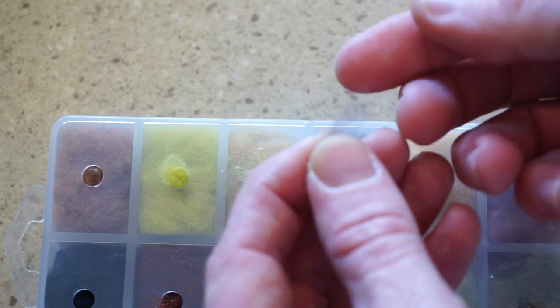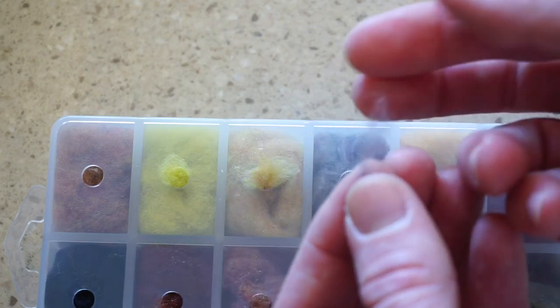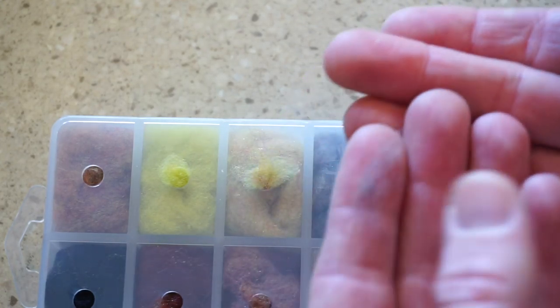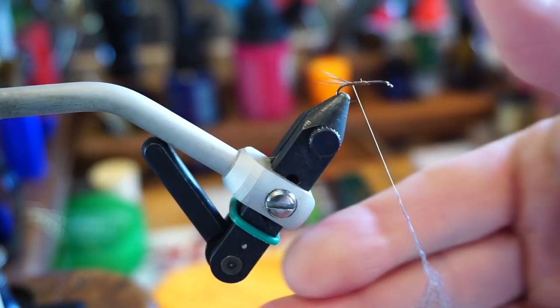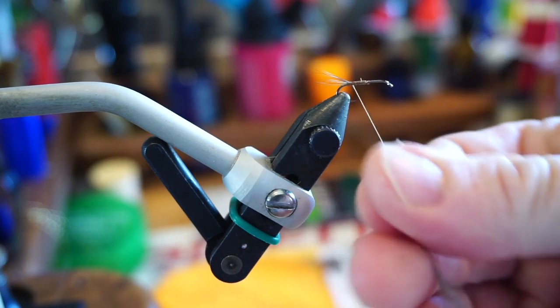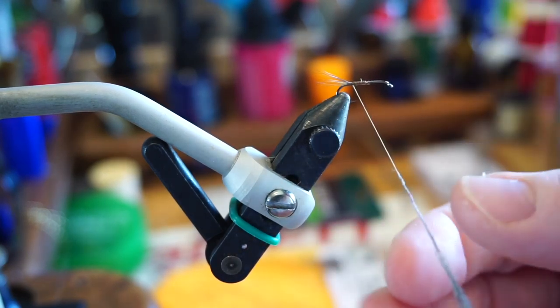Now last time I tied an Adams, many people complained that I didn't use original dubbing, which is muskrat. Yes, sure, there are some properties to muskrat which make it slightly better, but it is harder to find, and I like using the UV2 better. So that's what I'm using. Now feel free to use whatever you like.